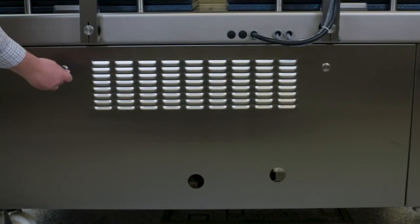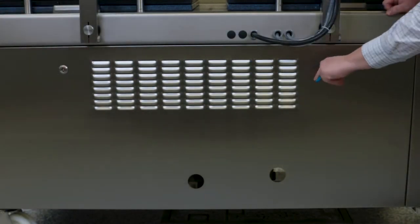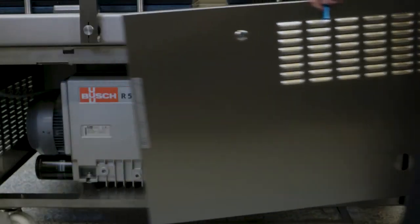With the machine unplugged from the power source, unlock the two deadbolts using the provided service key. Carefully lift away the back panel.